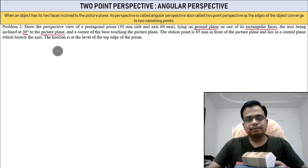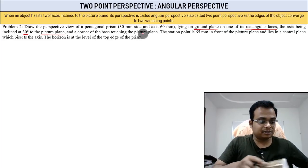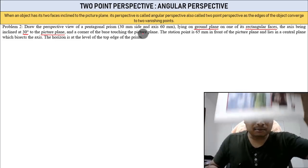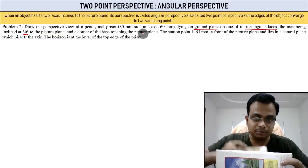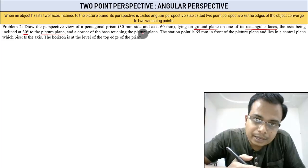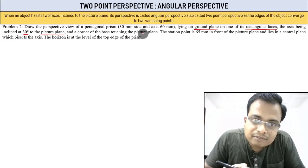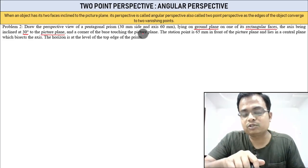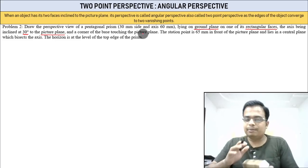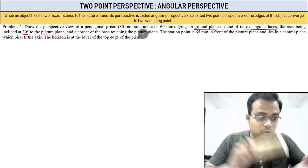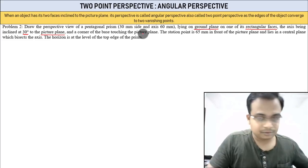The axis makes an angle of 30 degrees with respect to the picture plane, and a corner of the base is touching the picture plane. In the previous problem an edge was in contact with the picture plane, but here only a corner is in contact — that makes it more interesting.